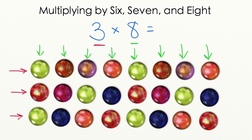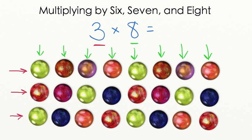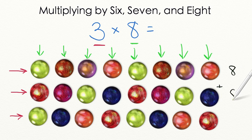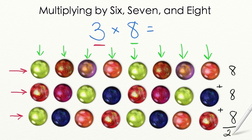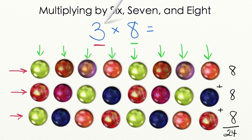Now remember, multiplication is repeated addition. So we are going to be repeatedly adding the number 8, 3 whole times. We start by adding 8 plus 8, which equals 16, plus 8, which equals 24. We have 24 dots in our array. That means that 3 times 8 equals 24.